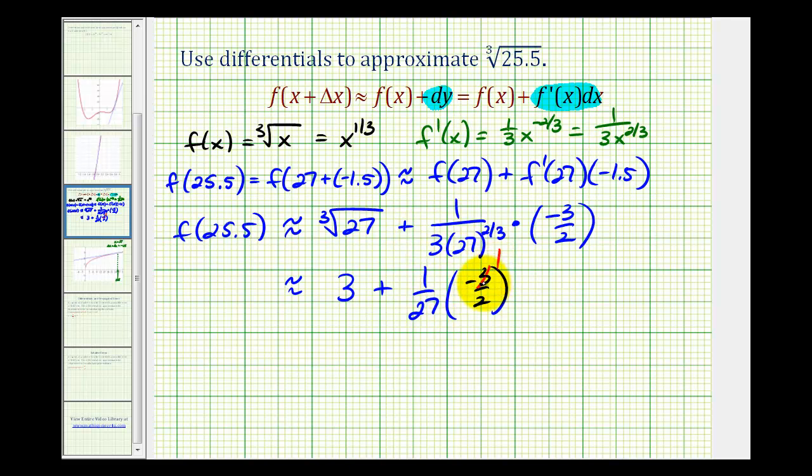Notice how this simplifies. There's 1 factor of 3 here and 9 factors of 3 here. So we have 3 plus, this is going to be negative 1/18. So we're going to have 2 and 17/18 as our approximation for the cube root of 25.5.